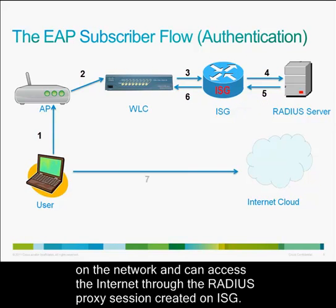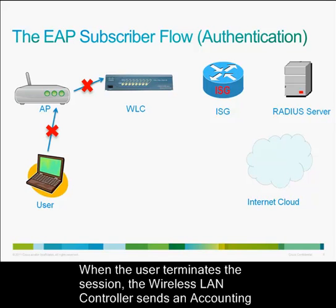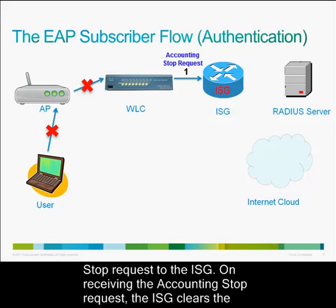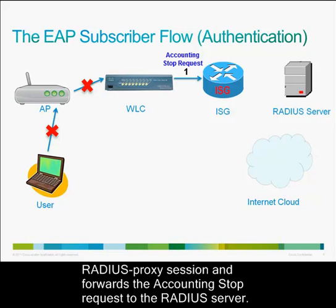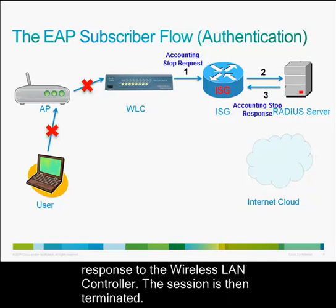The user is now on the network and can access the internet through the RADIUS proxy session created on the ISG. When the user terminates the session, the wireless LAN controller sends an accounting stop request to the ISG. The ISG clears the RADIUS proxy session and forwards the accounting stop request to the RADIUS server. The RADIUS server sends the accounting stop response to the ISG, and the ISG forwards the response to the wireless LAN controller. The session is then terminated.